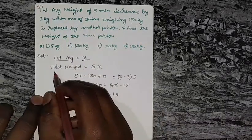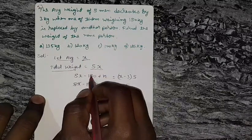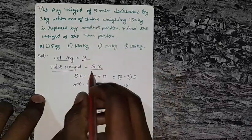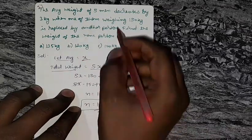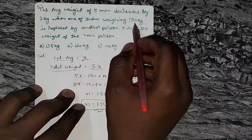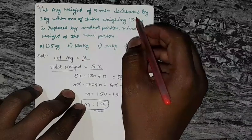The total weight is 5x, since there are five members. 5x minus 150, where 150 is the weight of one of the persons.